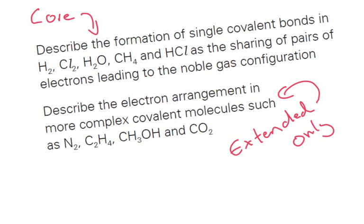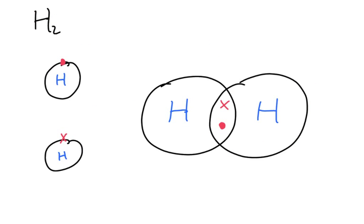And if you're doing the extended, you also need to be able to describe the electron arrangement in more complex covalent molecules such as nitrogen, ethane, methanol, and carbon dioxide. Okay, let's start with hydrogen.